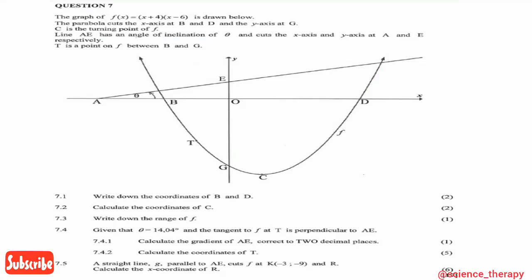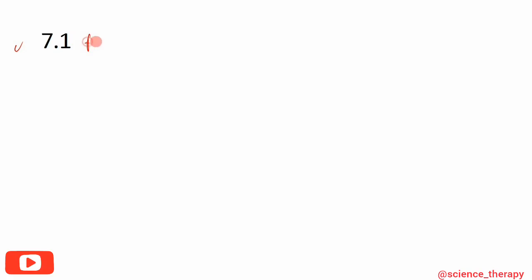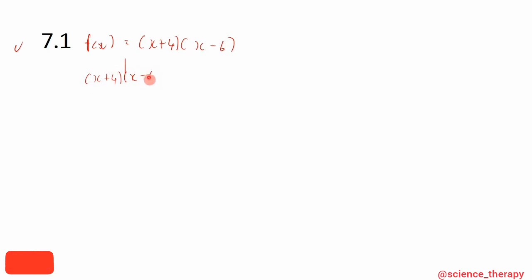Question 7.1 says write down the coordinates of B and D. We can see that B and D are the x-intercepts of the parabola graph of f(x). To find the x-intercepts we set f(x) = 0. So we have (x+4)(x-6) = 0.